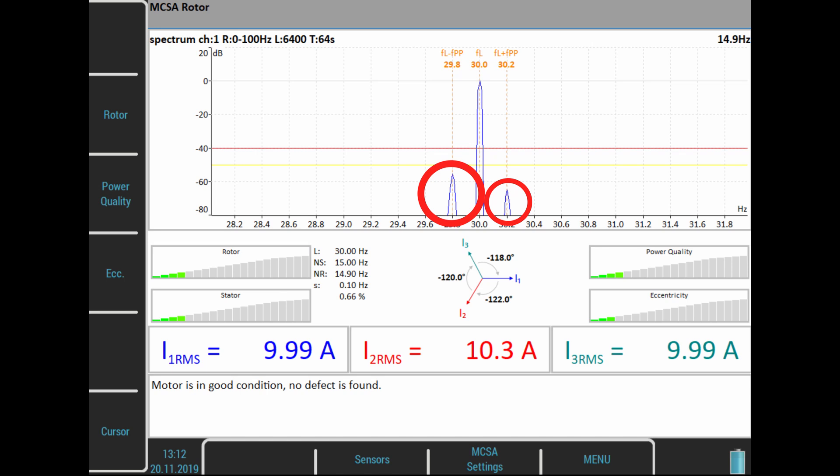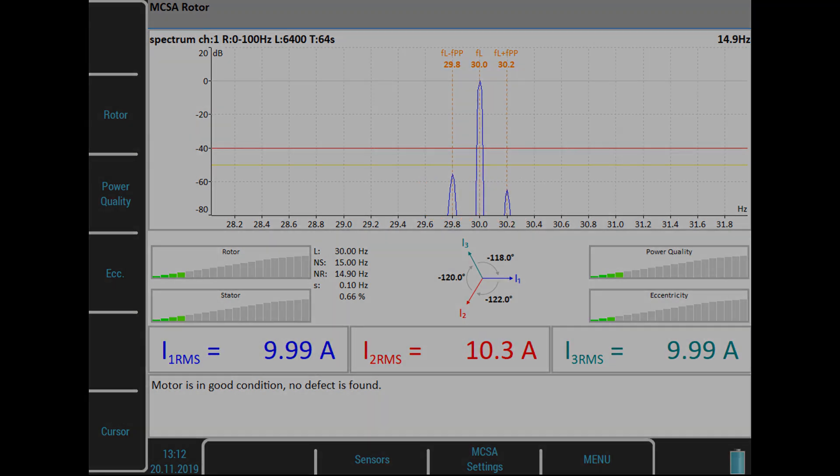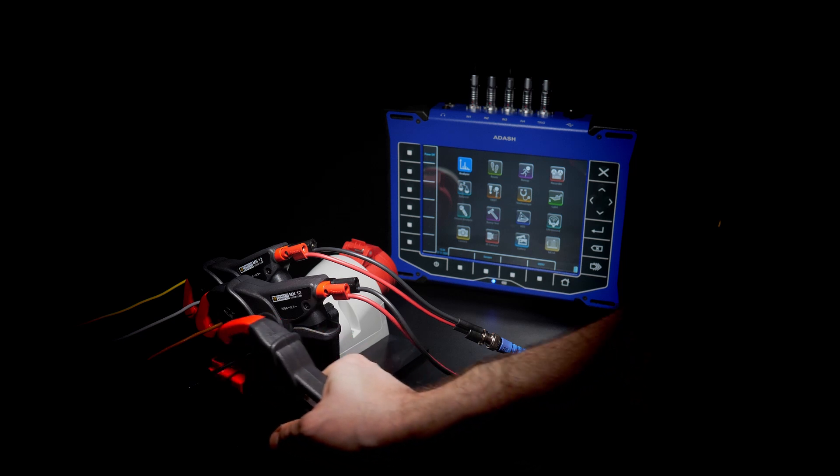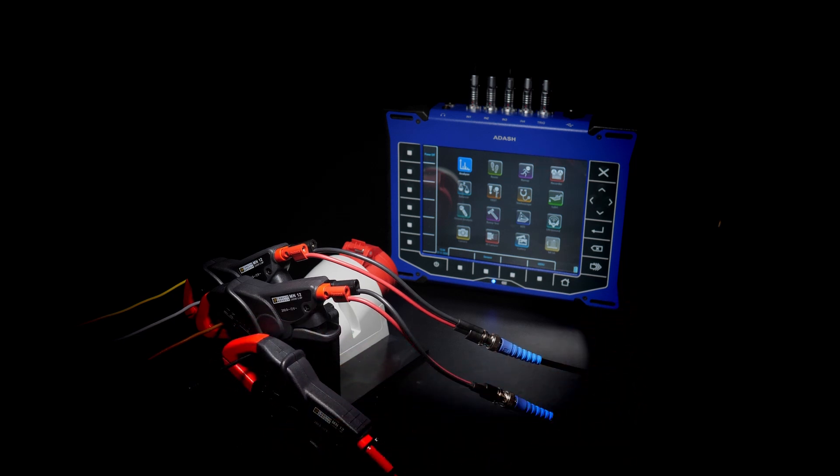Individual defects can be distinguished from each other according to the amplitude bands and the frequency or other signatures. The basis of this method is to measure the course of the stator current of one or more phases in the time domain and its subsequent spectral analysis.